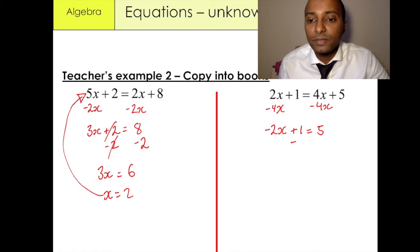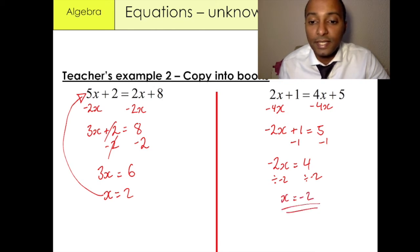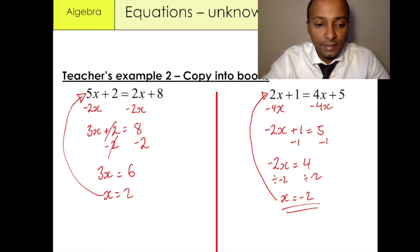We then minus 1 from the left-hand side and minus 1 from the right-hand side, and we have minus 2x is equal to 4. We then divide both sides by negative 2. Negative 2 divided by negative 2 gives us a positive, so x is equal to minus 2. And that's our final answer. You can always check whether it's correct by putting it back into the equation.